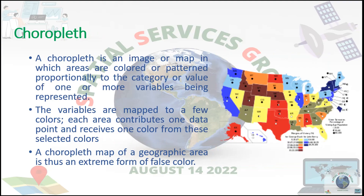Choropleth: a choropleth is an image or map in which areas are colored or patterned proportionally to the category or value of one or more variables being represented. The variables are mapped to a few colors; each area contributes one data point and receives one color from these selected colors. A choropleth map of a geographic area is thus an extreme form of false color.